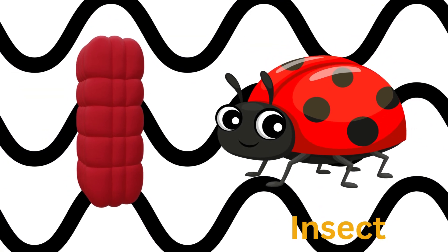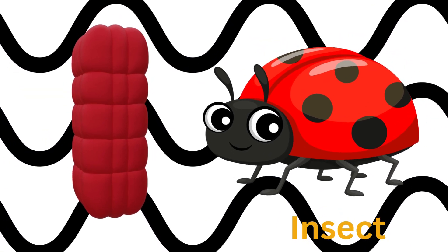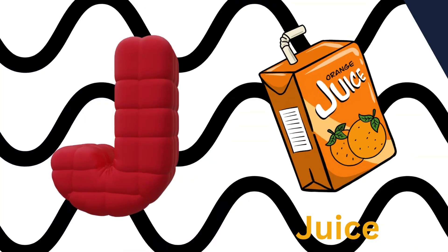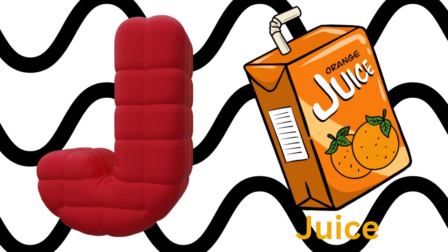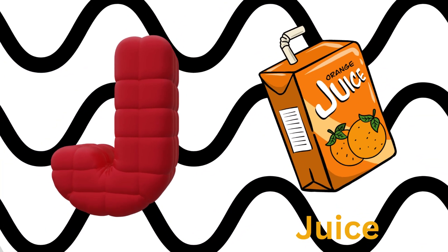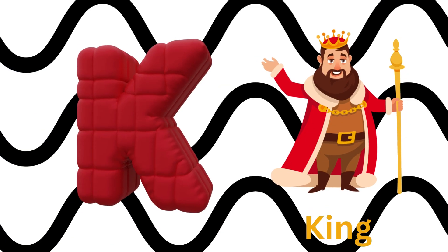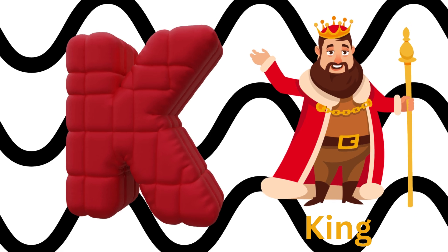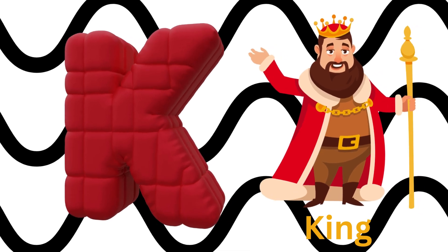I is for insect. I, insect. J is for juice. J, juice. K is for king. K, king.